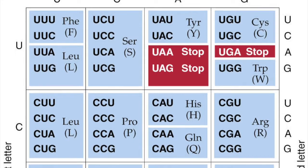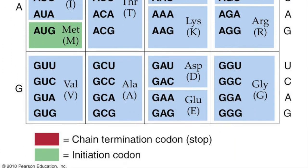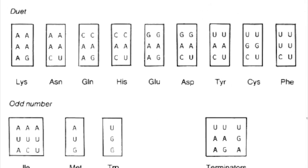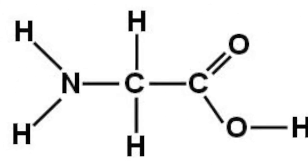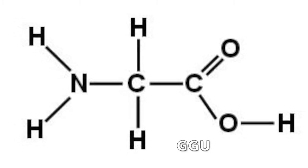Because there are 64 codons for the 20 basic amino acids, we call this universal code degenerate. Codon degeneracy basically means that it is redundant. Not only does GGA encode for glycine, but so do GGC, GGG, and GGU.